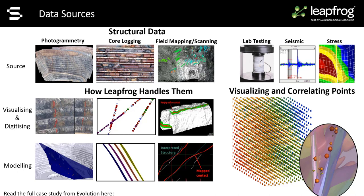These can include things like lab testing results, seismic data, slope stability models, and stress models. Any parameter that has an X, Y, and Z value can be brought into LeapFrog and viewed as point data or coded points. This gives you a platform to view all the relevant data in one place alongside all the other relevant data.